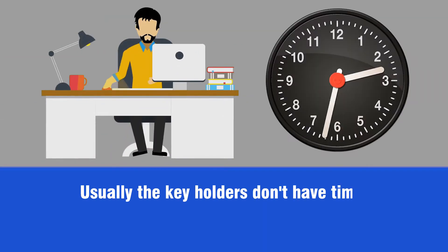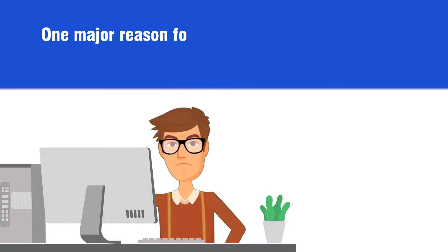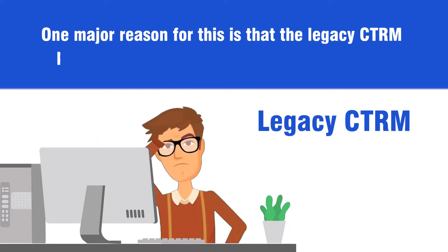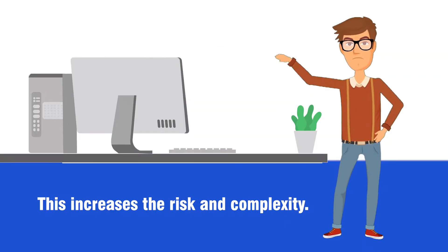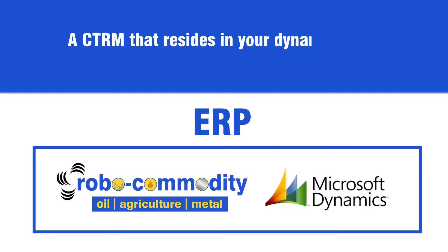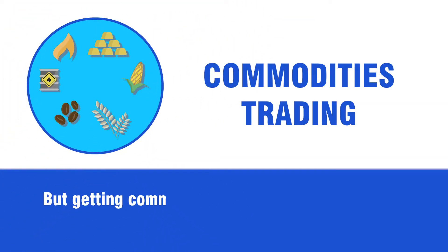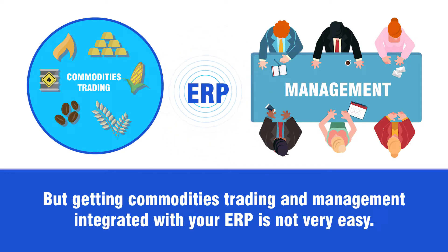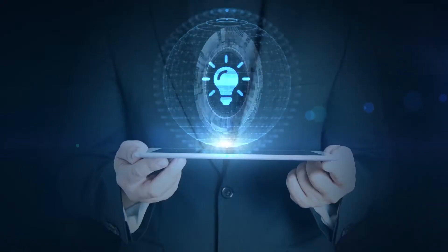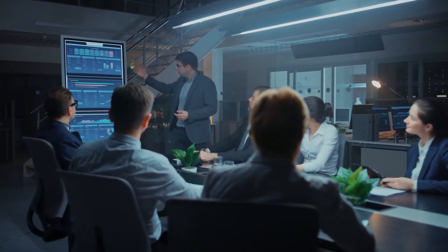Usually the key holders don't have timely access to the information they need. One major reason for this is that the legacy CTRM products sit outside of the enterprise and ERP, which increases the risk and complexity. A CTRM that resides in your Dynamics ERP can offer solutions to this problem. But getting commodities trading and management integrated with your ERP is not very easy. A good CTRM solution is needed, and RoboSoft Commodity does it for you.